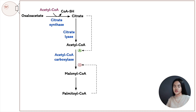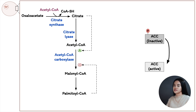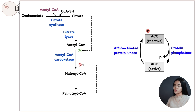Acetyl-CoA carboxylase (ACC) can also be hormonally regulated through phosphorylation and dephosphorylation. ACC exists in two forms: an active dephosphorylated form that produces malonyl-CoA, and an inactive phosphorylated form. To activate ACC, phosphatase removes the phosphate group. To inactivate it, protein kinase phosphorylates ACC, requiring ATP.